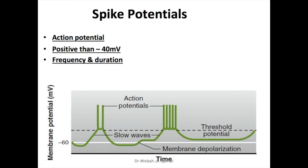The comparatively longer duration of spike potentials is because of the slowness of opening and closing of calcium-sodium channels. In a spike potential, depolarization is caused by slow calcium-sodium channels allowing especially large numbers of calcium ions to enter along with a smaller number of sodium ions. Repolarization is caused by the opening of voltage-gated potassium channels.